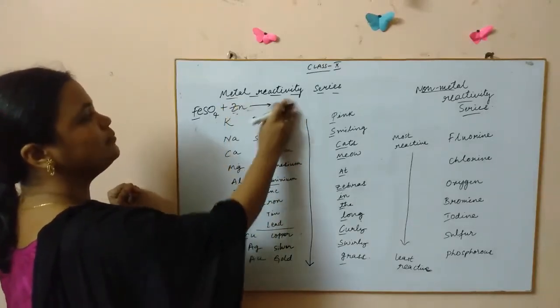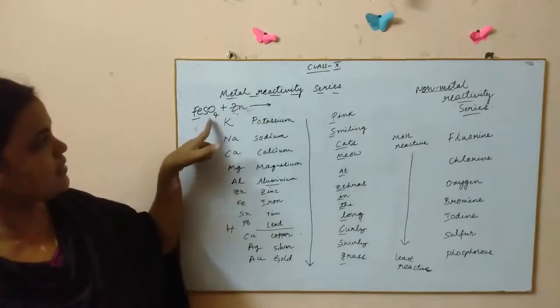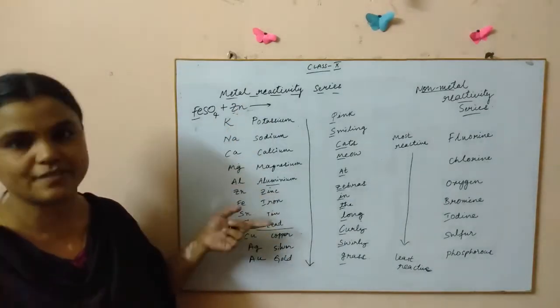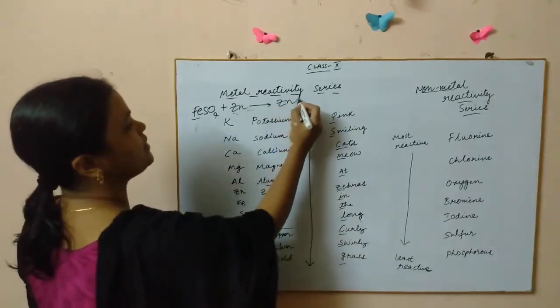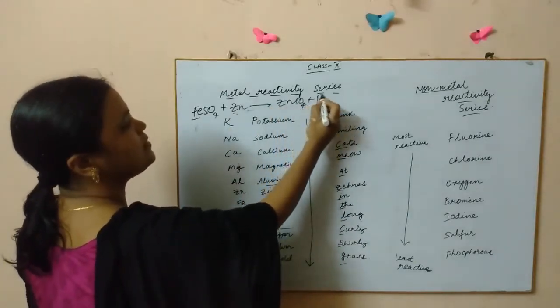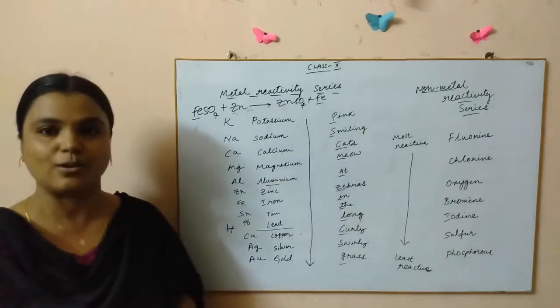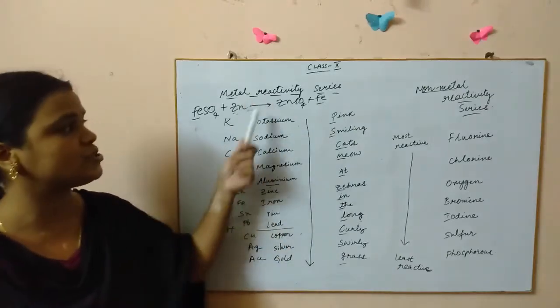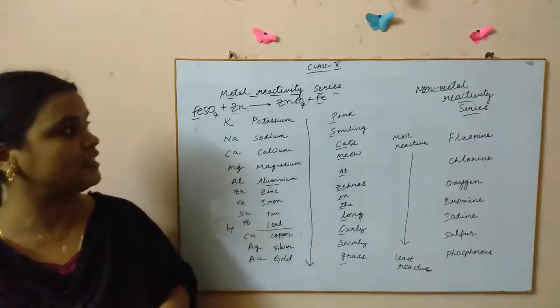Now iron is somewhere over here and magnesium is here, yes there can be a reaction. If I write zinc here, iron sulfate plus zinc, can it happen? Yes it can happen because zinc is more reactive than iron. So what you get is zinc sulfate plus iron will be displaced out.